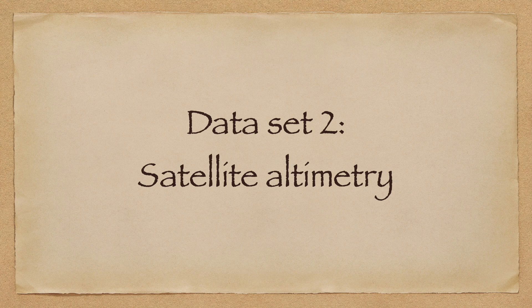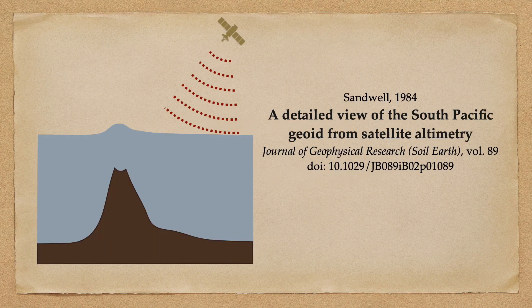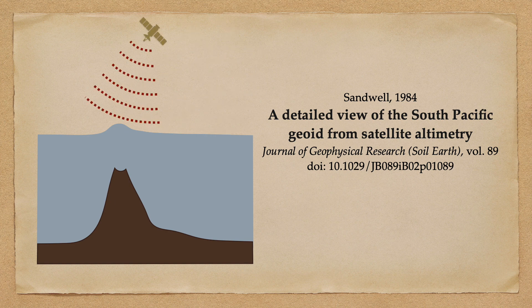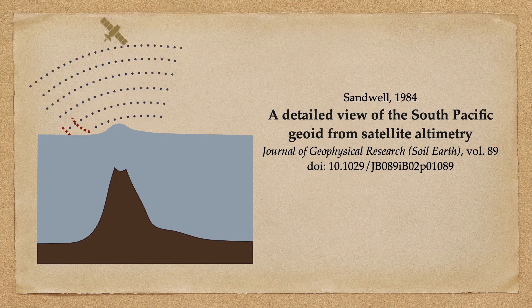Beyond direct measurements of Earth's gravitational field, there is another data set we can use to constrain mean sea surface height, and that is satellite altimetry. As I discussed in the first episode of this series, satellite altimetry works by broadcasting a time-encoded radio signal down to the surface and seeing how long it takes to return to the craft.